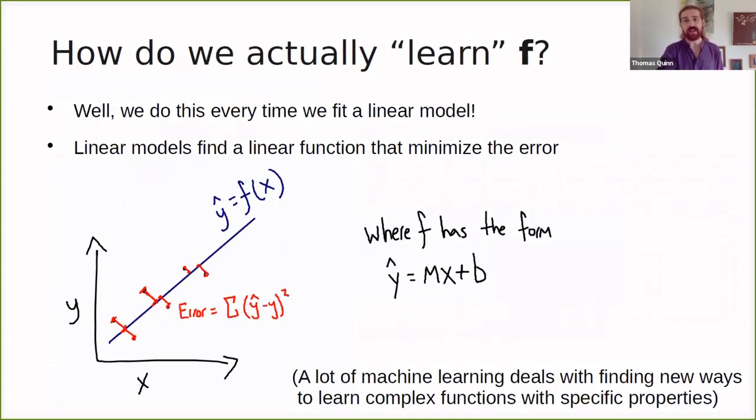Now, how do we actually learn F? Well, we do this every time we fit a linear model. And if you can think about the fitting of a line as a type of machine learning algorithm, it can make it a lot easier to understand the more complicated models that are more frequently used. So the linear model is a linear function that minimizes the error. If we have some input X for a single predictor and some output Y, we're saying that there is a function that has the form mX plus b, some slope times the input plus an offset that approximates Y, which we can call Y hat.